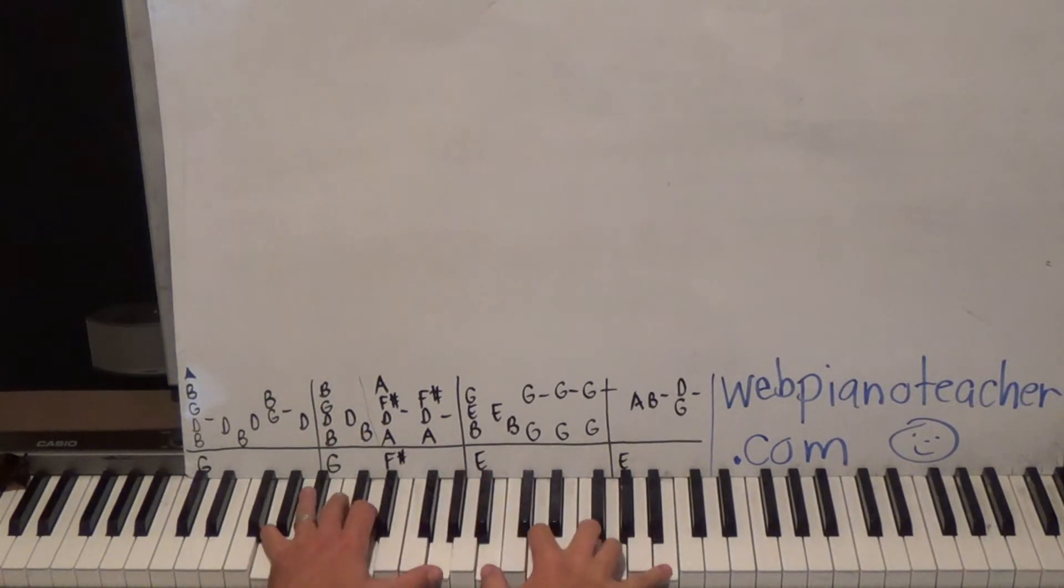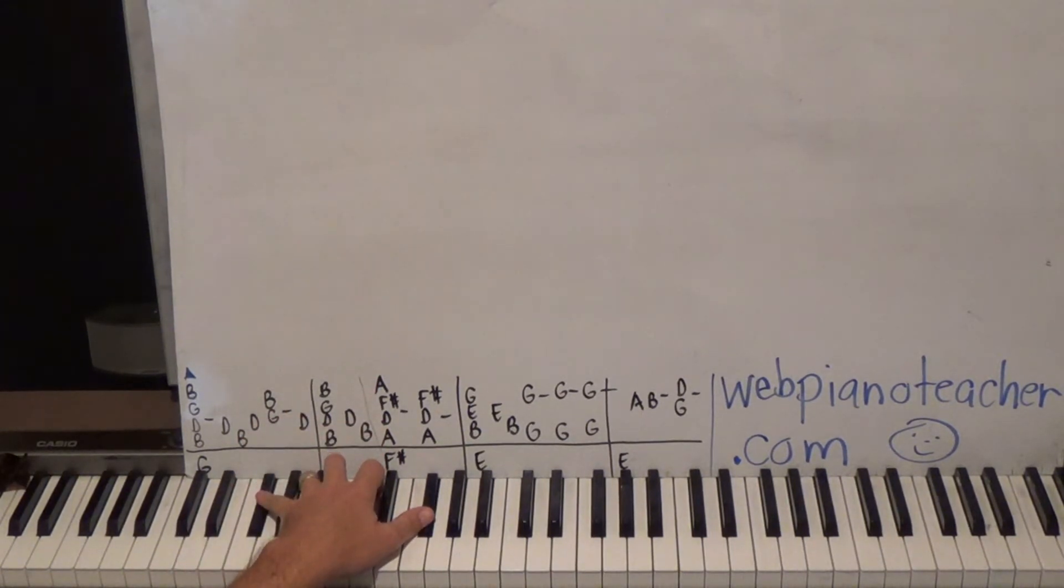The left hand is doing G. Then we're going to go to F sharp on this one. Okay so G D G for left hand there. On this one we'll just do the F sharp. Don't worry about a note in the middle. Just the F sharp vamping.